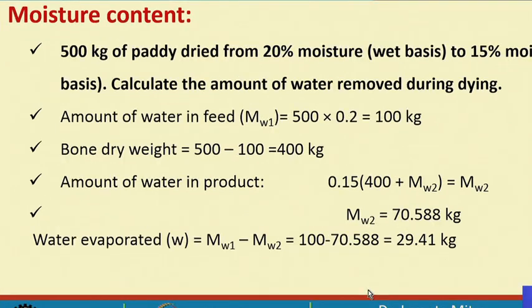This kind of analysis and calculation is very common because most of the time when we want to store any grain food, we need to know the safe storage moisture level. We can convert it to dry basis or wet basis and then determine how much moisture needs to be removed.